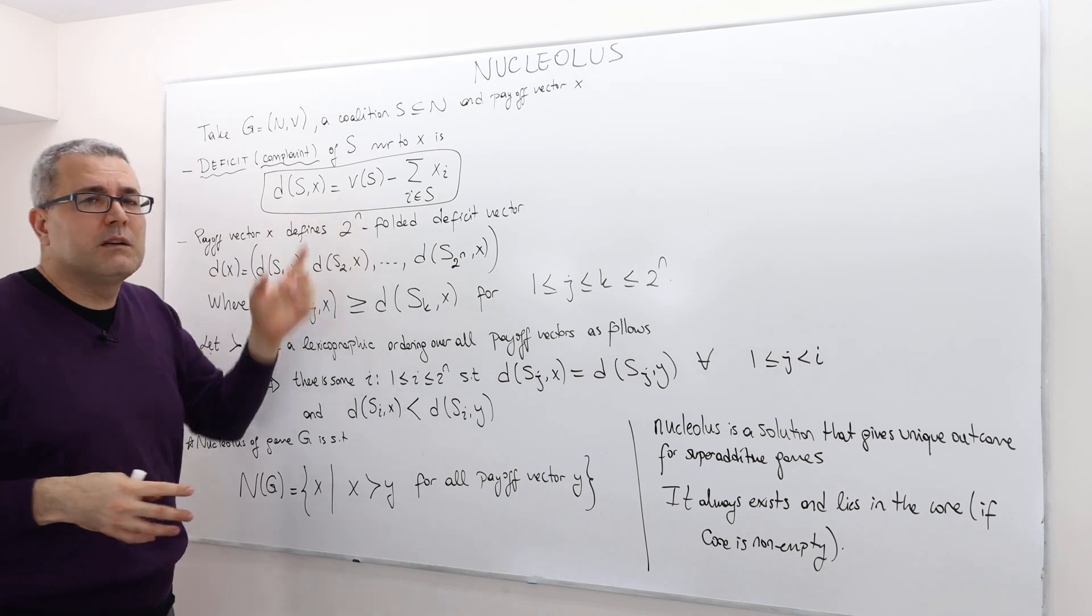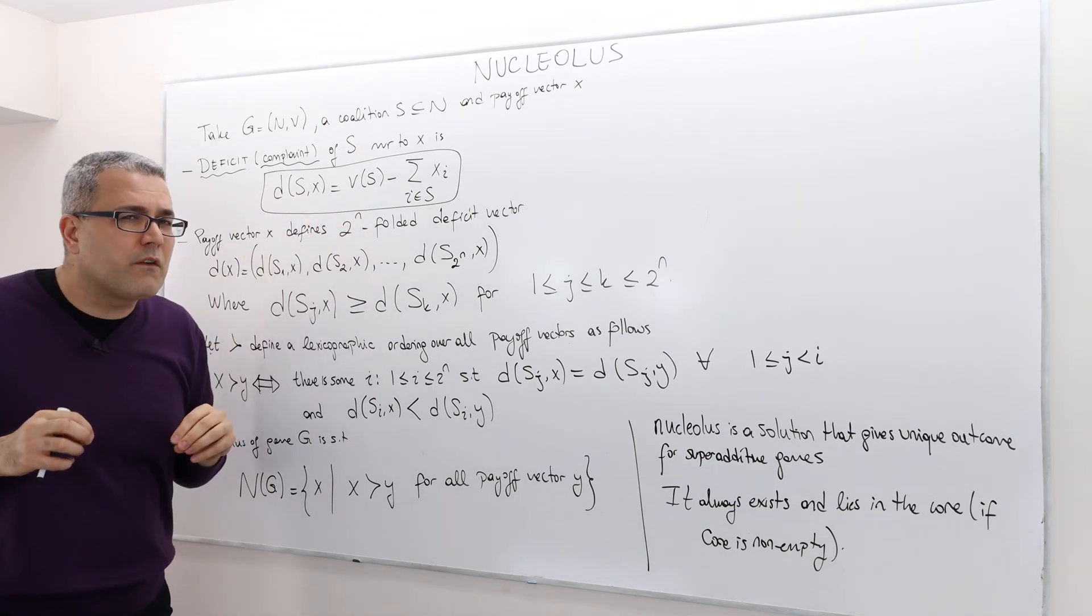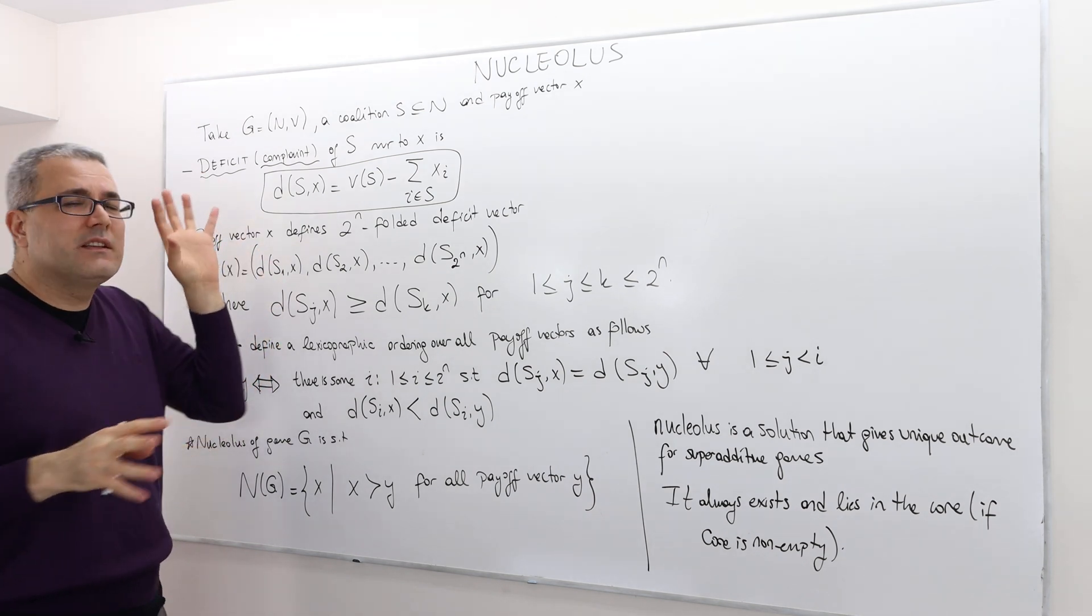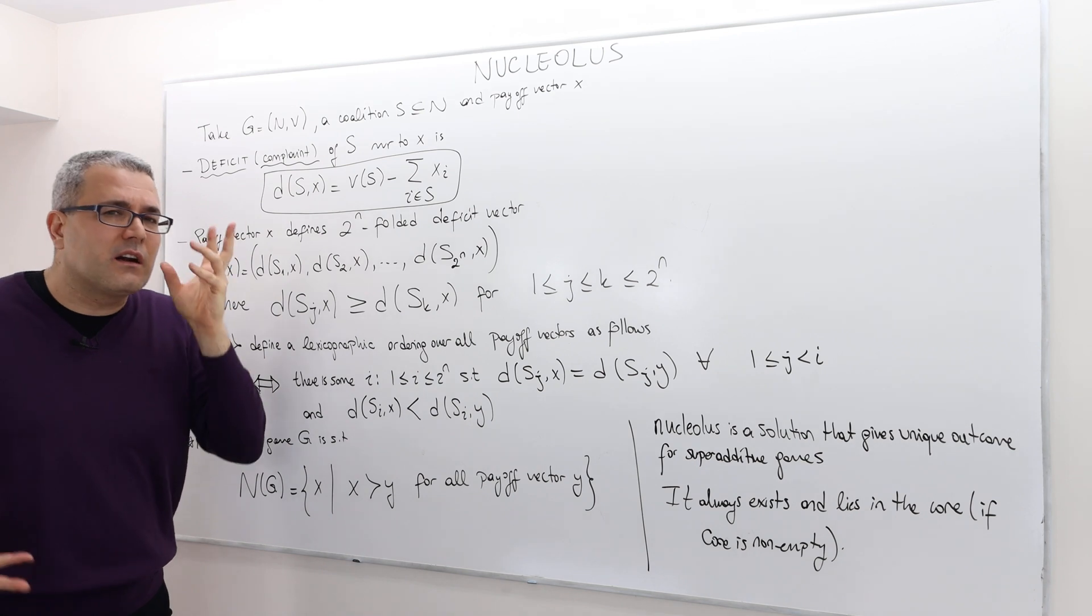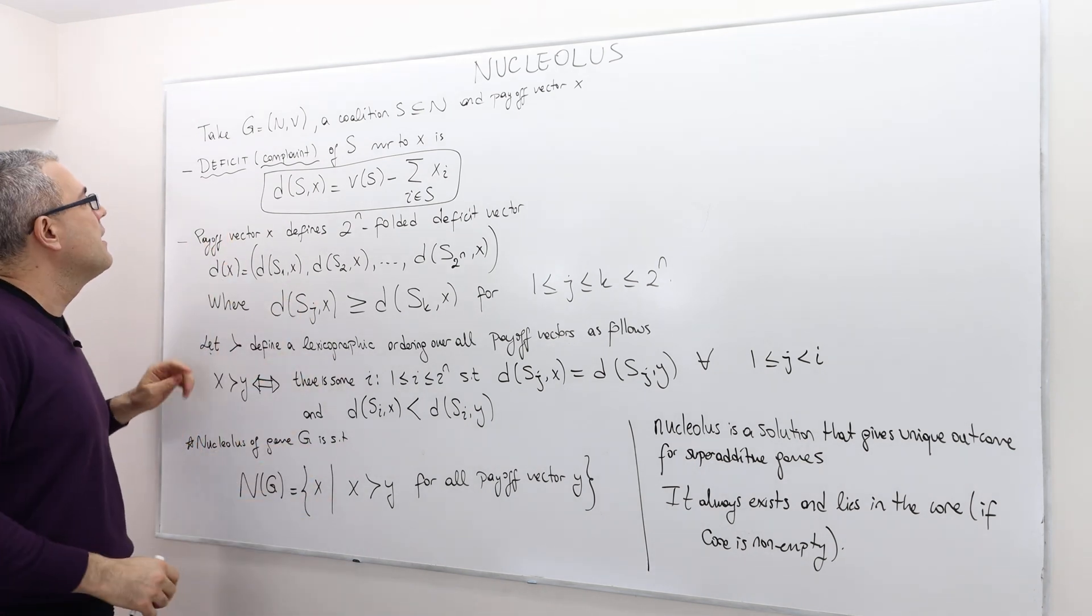In a sense, if the complaint is positive for some coalition, then this payoff vector cannot be stable. So the deficit and stability are sort of related notions. And eventually, we're going to come to that.